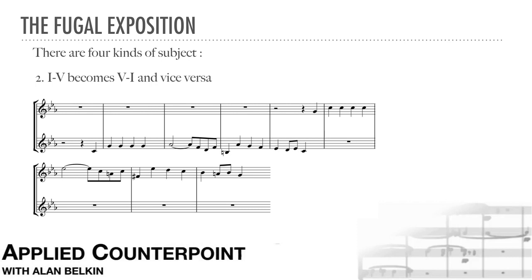The second kind of subject is the one we saw at the start of this lesson. A leap at the start of the subject, from tonic to dominant or vice versa, is changed so that a fifth becomes a fourth, or vice versa. Since exchanging one leap for another stays within the category of close motivic variations, it goes virtually unnoticed by the listener. This is the simplest kind of tonal answer.